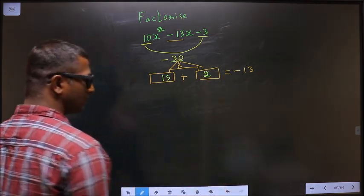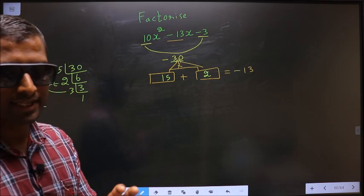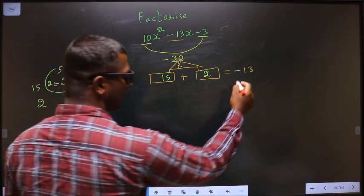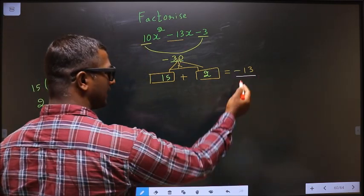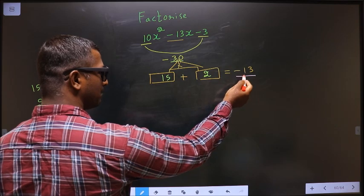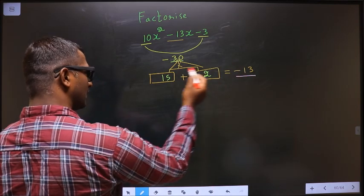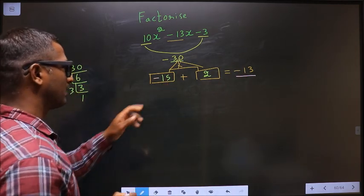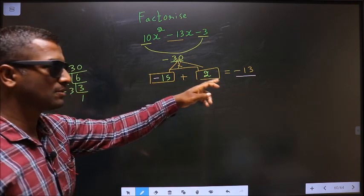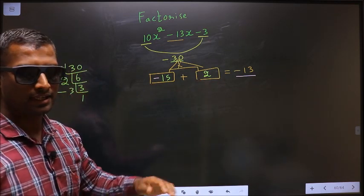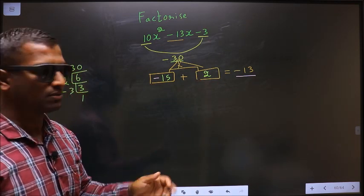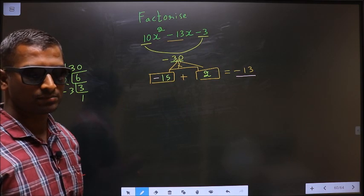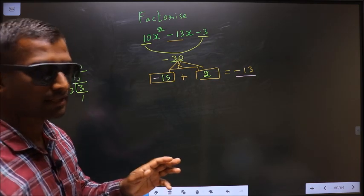Now you should adjust the signs. Here I need to get minus 13, and that can only happen if you put a negative before 15. Minus 15 plus 2 is minus 13, and minus 15 into 2 is minus 30. Signs are adjusted.